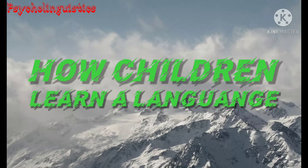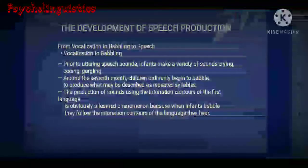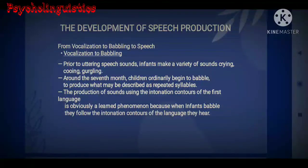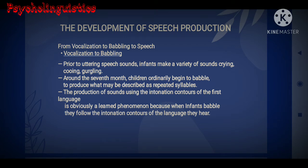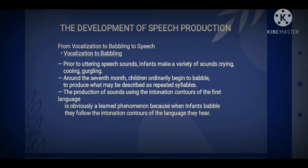I would like to retell a few materials. The first one is the development of speech production, from vocalizations to babbling. Prior to uttering speech sounds, infants make a variety of sounds: crying, cooing, and groveling. Around the seventh month, children ordinarily begin to babble, producing what may be described as repeated syllables.